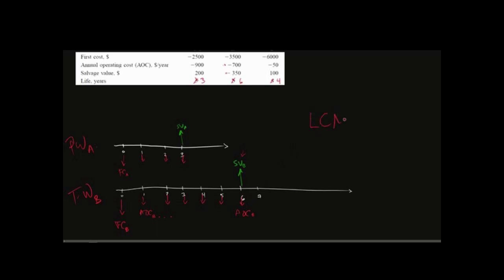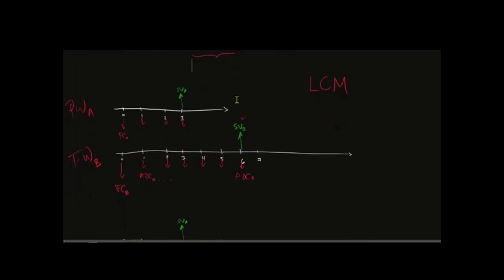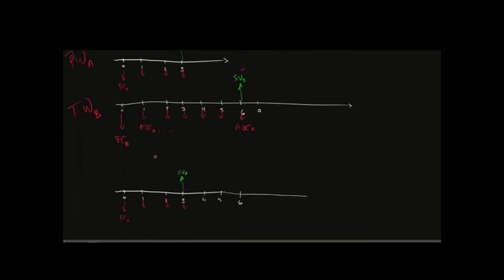So what do we do instead? Well, if we're going to look at it in present worth, then we're going to look at it in terms of the least common multiple of the options. So for now, let's just look at A and B. Let's redraw A. So here is the present worth of A, but I'm going to put underneath LCM, because this is what it looked like before.